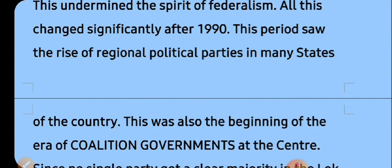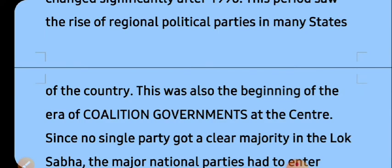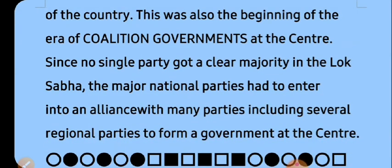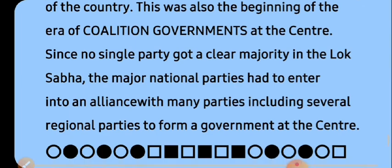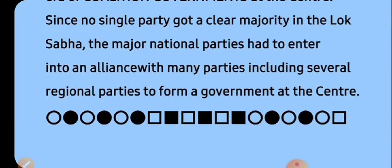All this changed significantly after 1990. This period saw the rise of regional political parties in many states, marking the beginning of the era of coalition governments at the center. Since no single party got a clear majority in the Lok Sabha, the major national parties had to enter into alliances with many parties — including several regional parties — to form a stable government at the center.